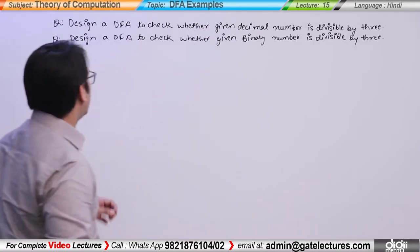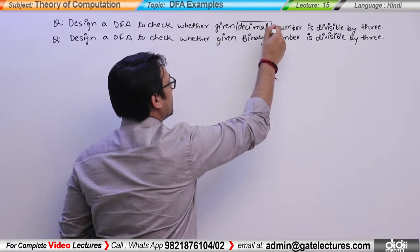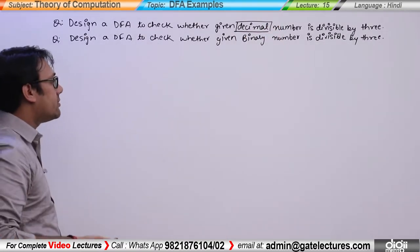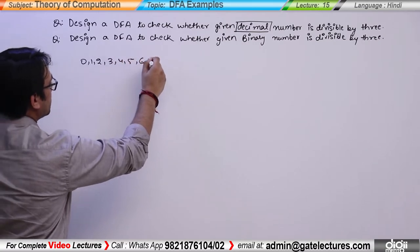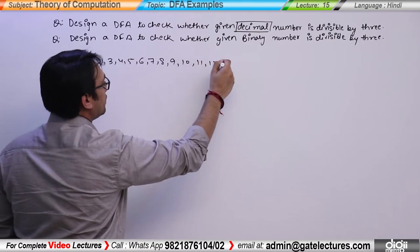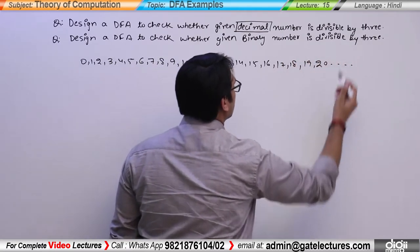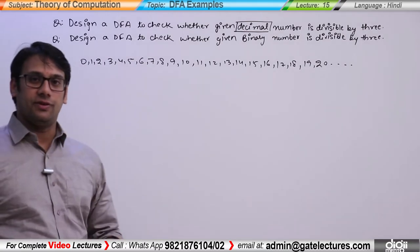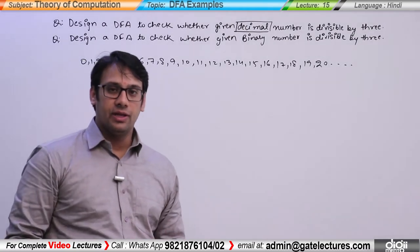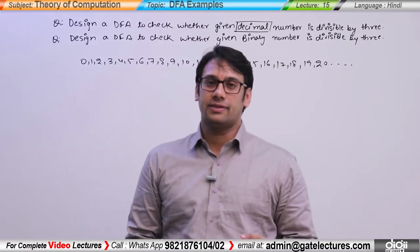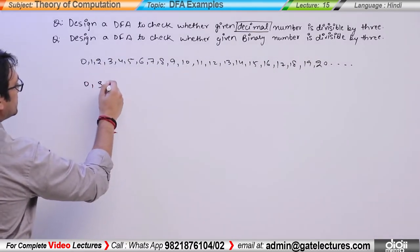For the given decimal number to be divisible by 3, we talk about decimal numbers: 0, 1, 2, 3, 4, 5, 6, 7, 8, 9, 10, 11, 12, 13, 14, 15, 16, 17, 18, 19, 20, and so on. When you divide any number by 3, you have 3 possible remainders: you have to remember 0, 1, or 2. Numbers like 0, 3, 6, 9, 12, 15 give remainder 0.